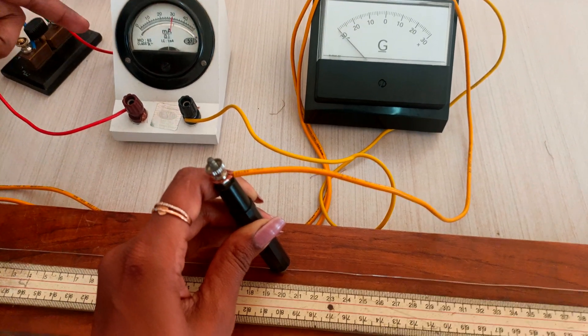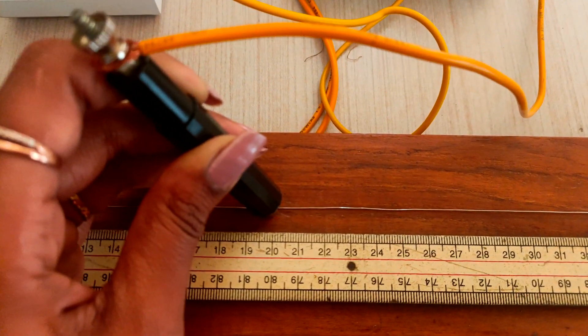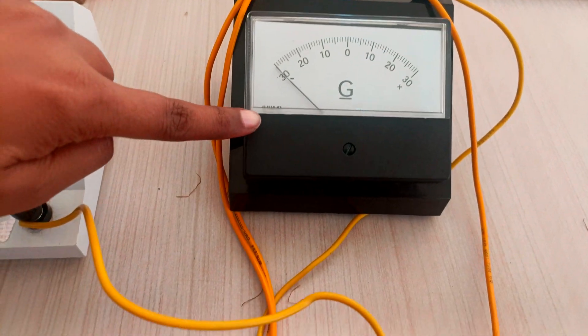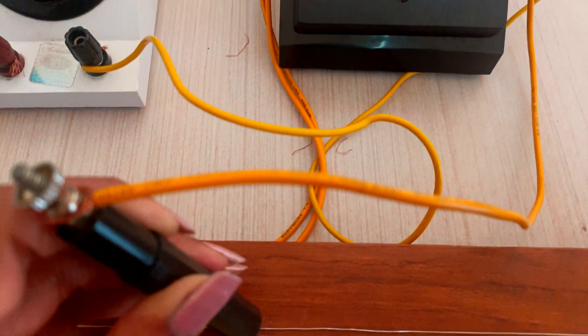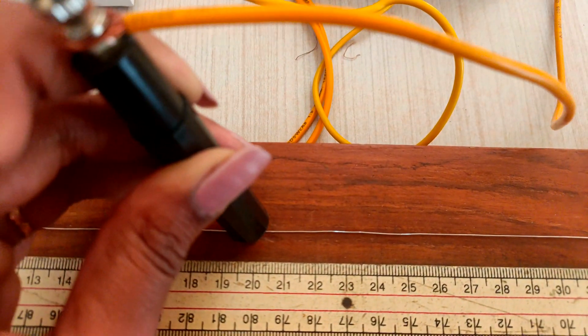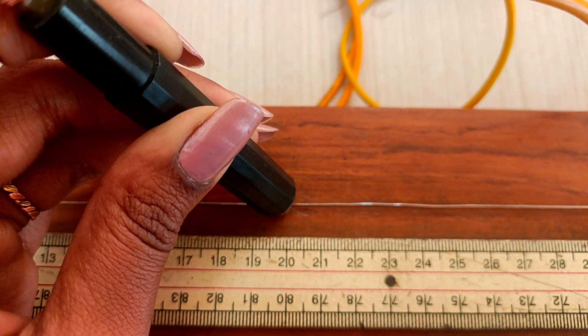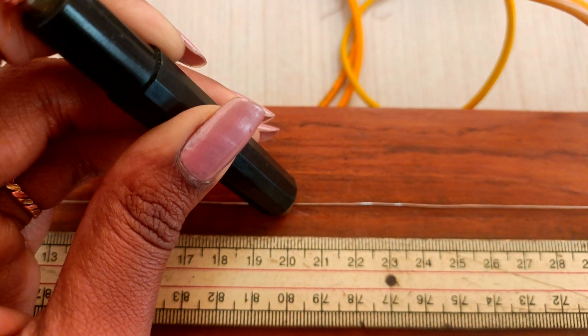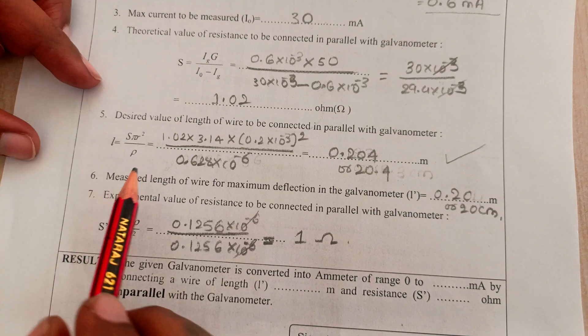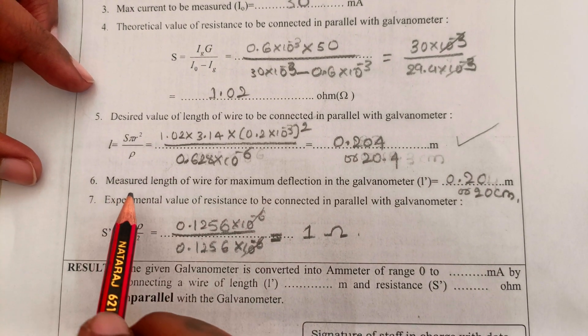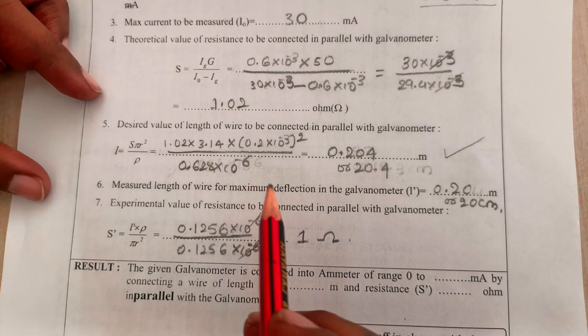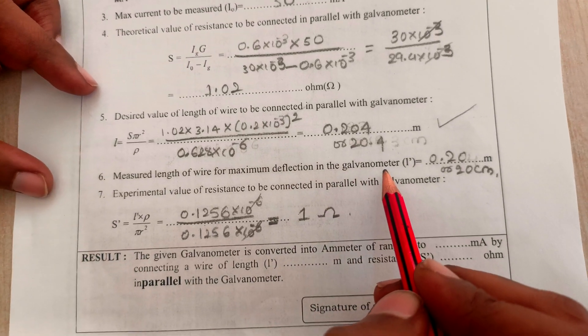You can see the readings as 30 divisions in the galvanometer. The length was set up in the meter bridge, it is nearly 20, you can read it as 19.8 also.